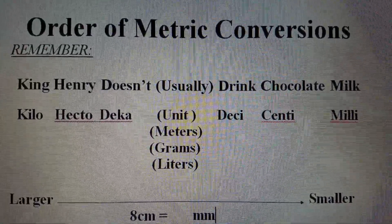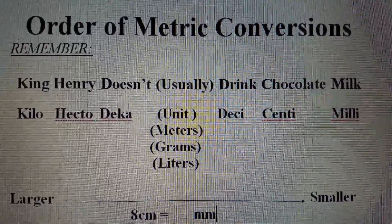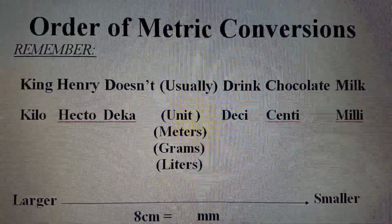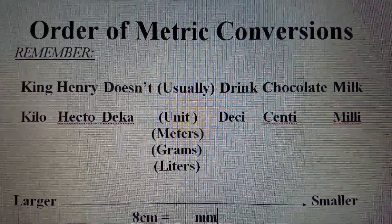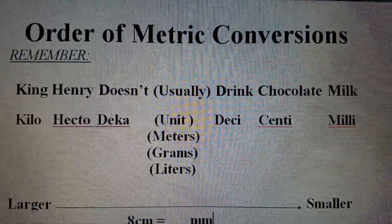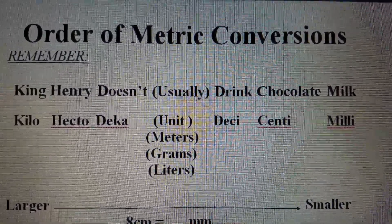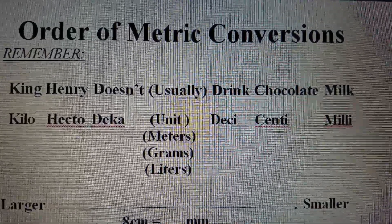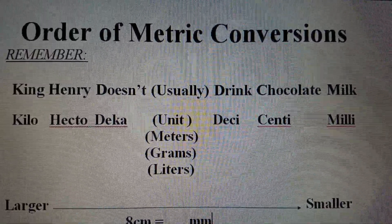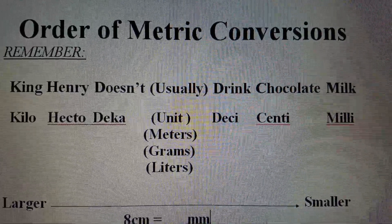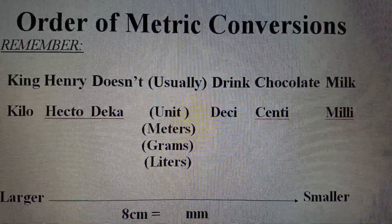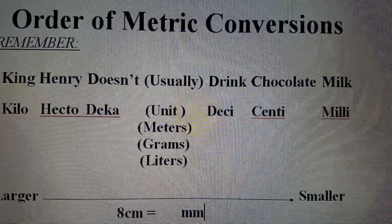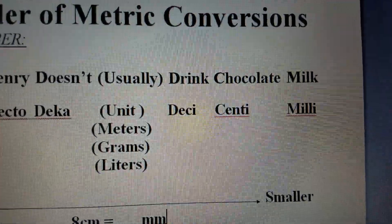The first letter of each word in the acronym represents the prefix of a metric unit. For example, the K in King represents kilo. The H in Henry represents hecto. The D in doesn't represents deca. The U in usually represents the three basic units in the metric system: meters, grams, or liters. The D in drink represents deci. The C in chocolate represents centi. And the M in milk represents milli.